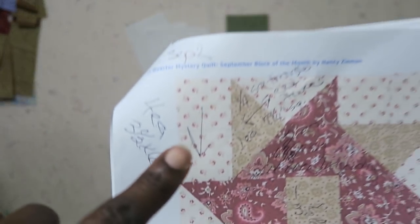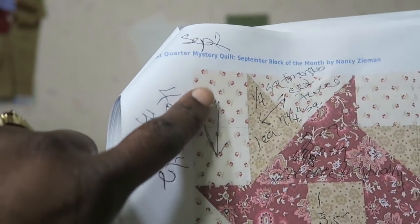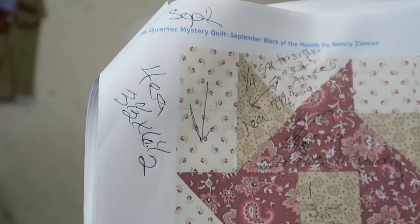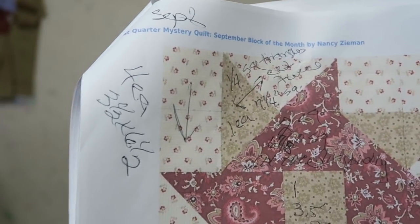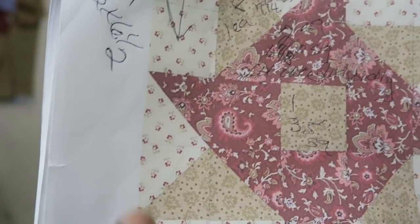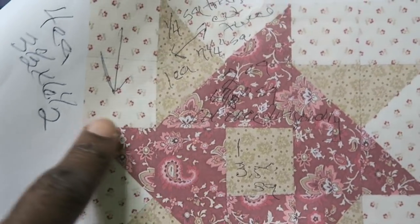For this section here I'm combining two squares so I'm cutting that three and one half by six and a half. I need four of those and then I go into this section here I need to make this large half square triangle.